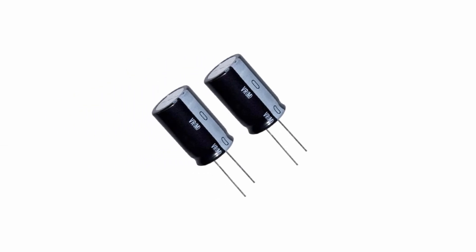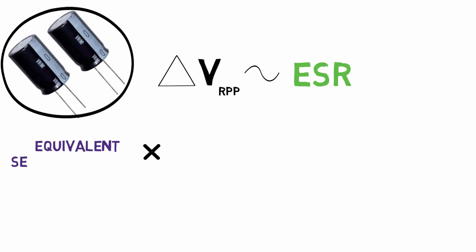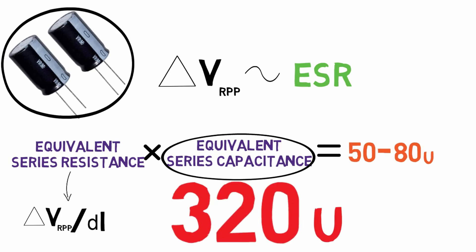Now select the output capacitor value such that it will meet the maximum output ripple voltage specification. Output ripple is determined by the ESR, that is equivalent series resistance of the capacitance. Generally we use aluminum capacitors. There is a product of ESR and ESC which is always constant for these capacitors and this value ranges from 50 to 80 micro. Where R is given as peak-to-peak ripple voltage upon dI. Hence by solving this equation we get the value of the capacitor as 320 microfarad.